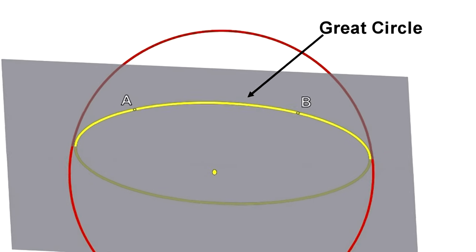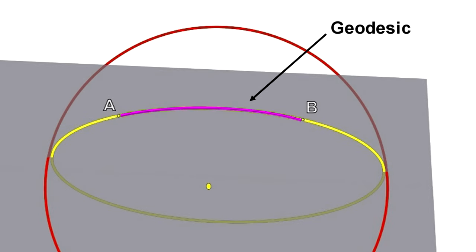The segment of the circle that connects the two points is the shortest distance between the two points. A parallel of latitude line between the two points would be longer.